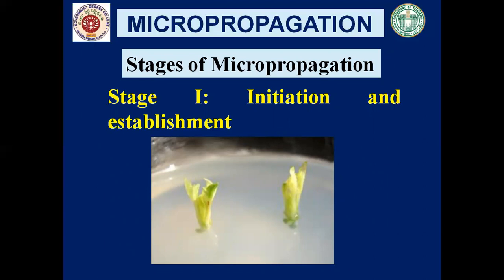After surface sterilization, the explant is placed on the appropriate nutrient medium. In this picture we are seeing an explant — this is an explant of a leaf or a bud portion. We have taken the stem along with the bud portion and placed it in an appropriate medium. This is known as initiation and establishment.